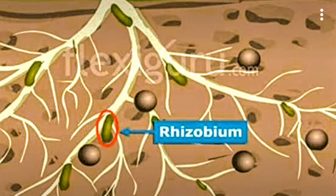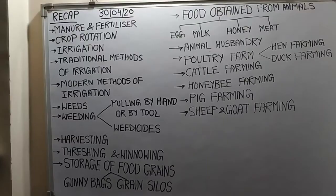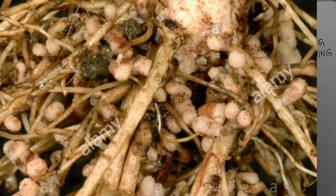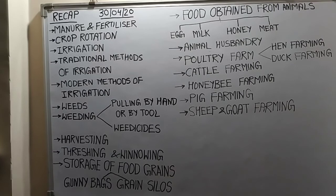As you can see in the picture, the rhizobium bacteria are present in the root nodules. This picture shows a real root of pea, bean, or gram, in which you can see the rhizobium bacteria present in the root nodules. The next activity done by the farmer is called irrigation — the supply of water to the crops at regular intervals is called irrigation.